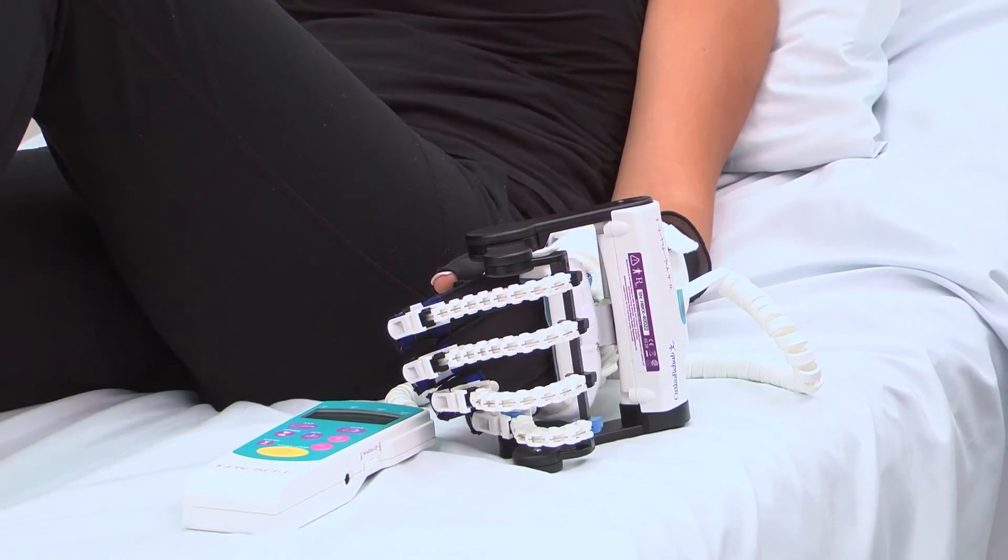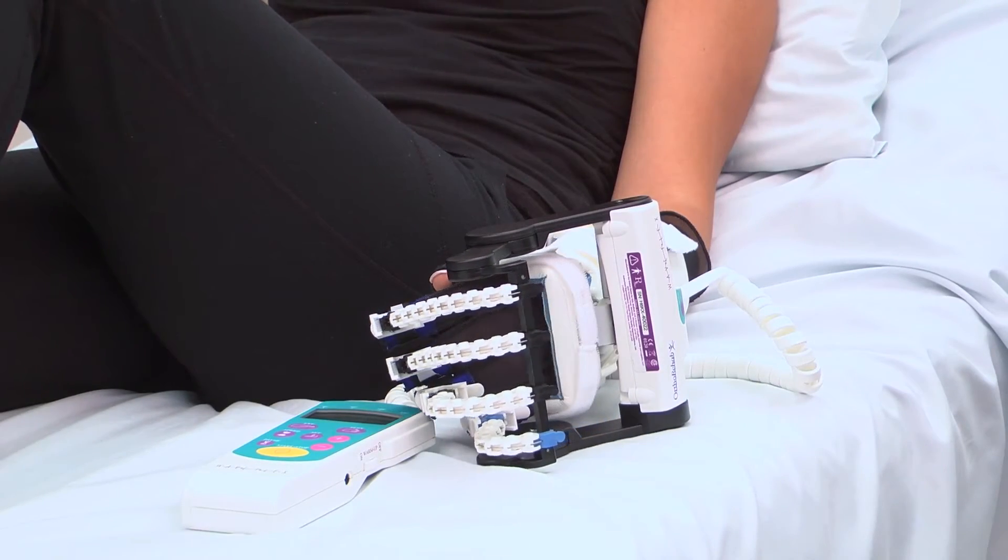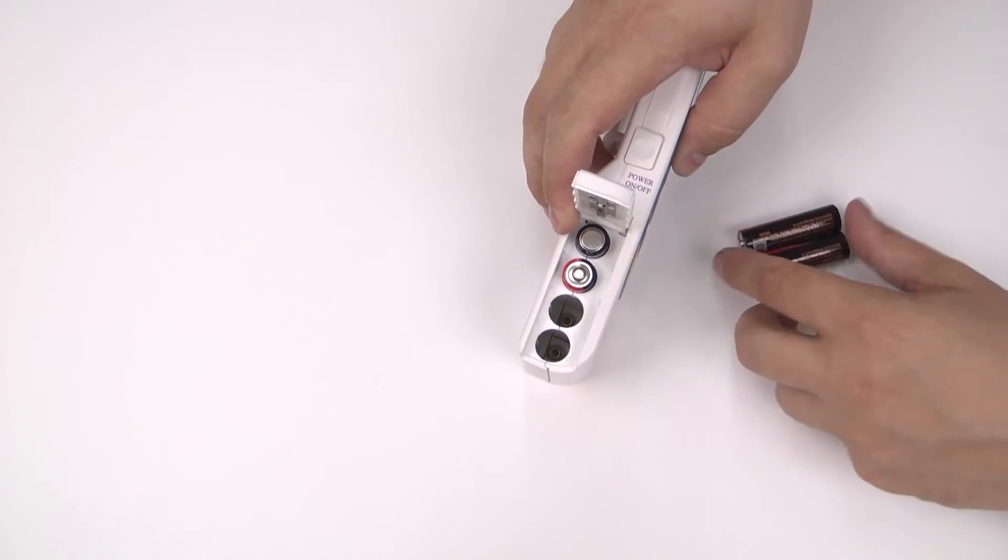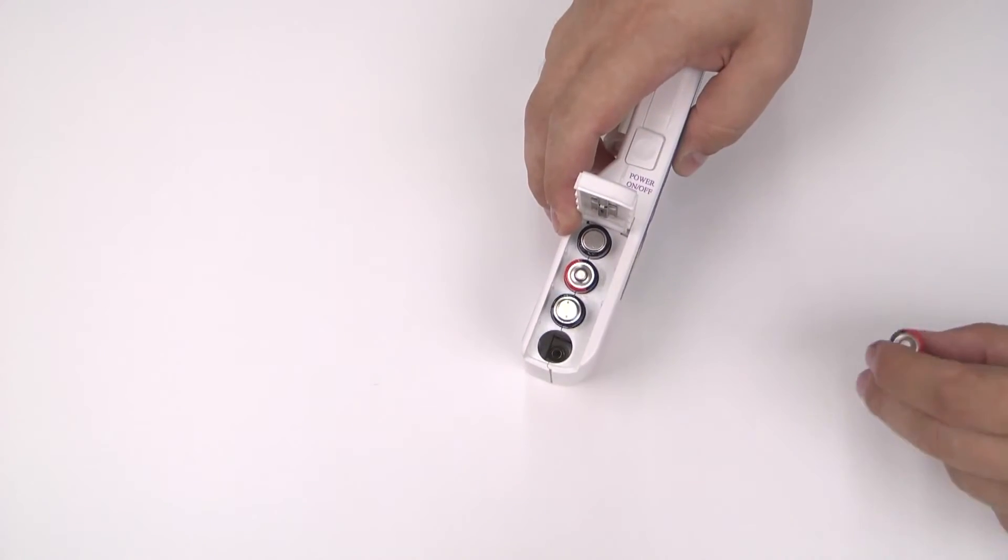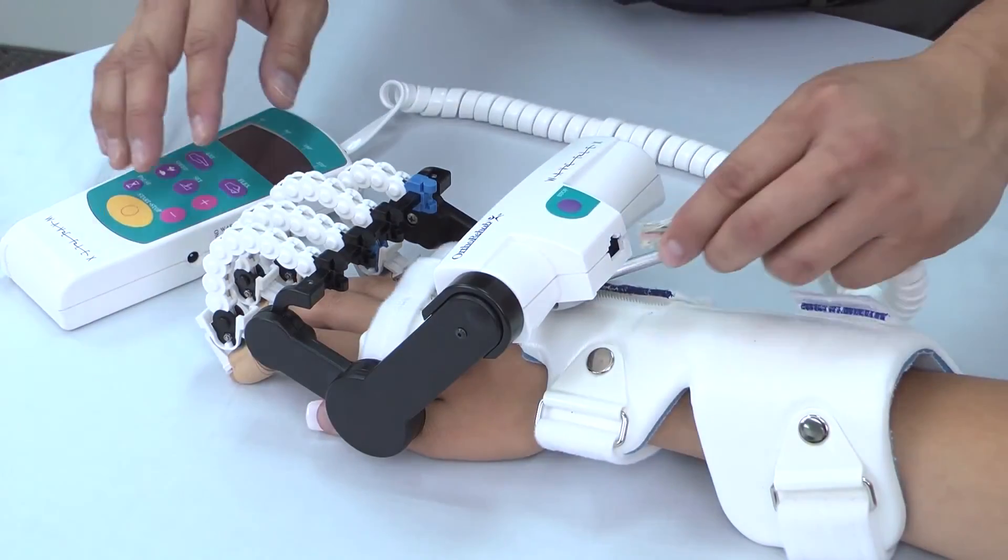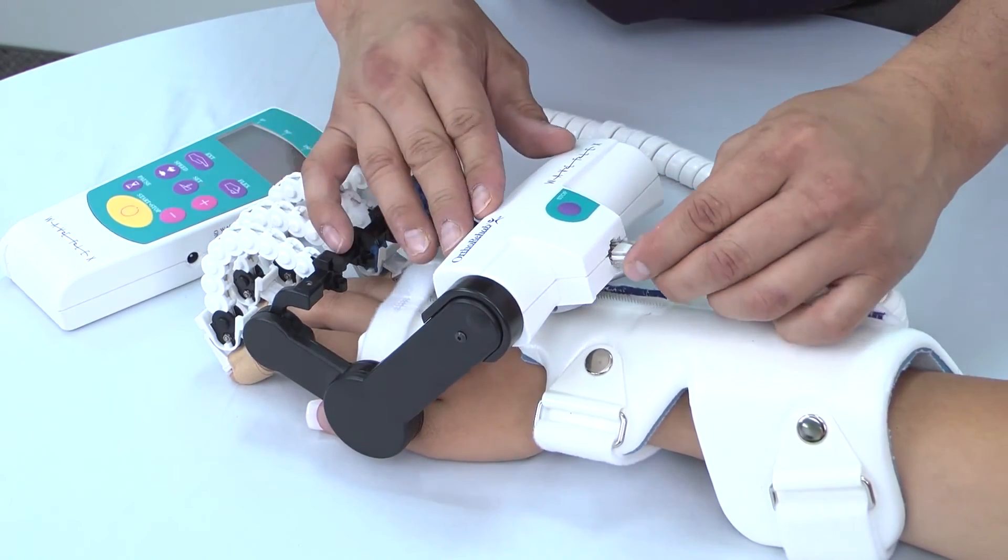With patient setup complete, we're now ready to program the CPM controller. First, install four AA batteries. Plug the controller cable into the CPM actuator.